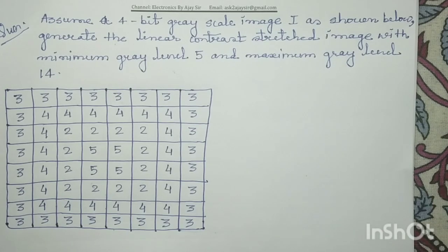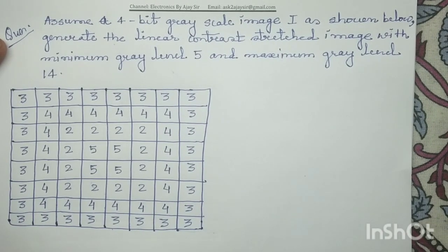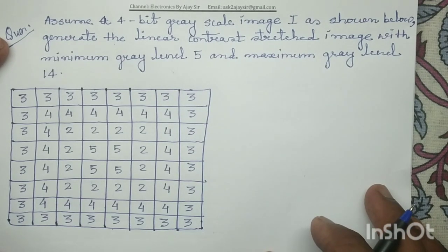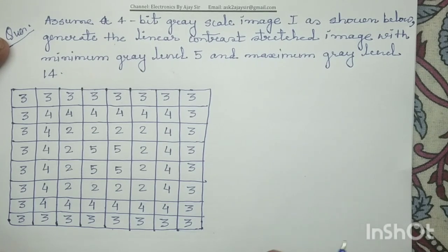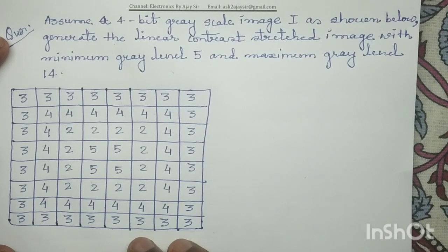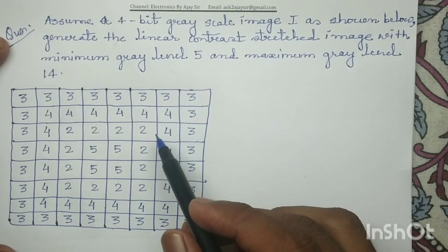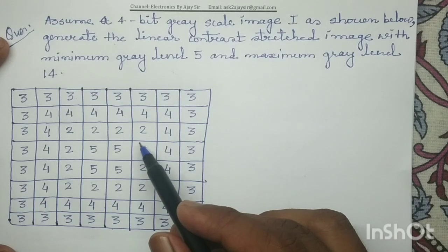Good morning. The next question is taken from linear contrast stretching. An input image is given and we have to perform histogram stretching or linear contrast stretching. To proceed, we need to determine r_min, r_max, s_min, and s_max. This is an 8x8 image, and we first determine the minimum and maximum gray levels. The minimum gray level is 2 and the maximum gray level is 5.